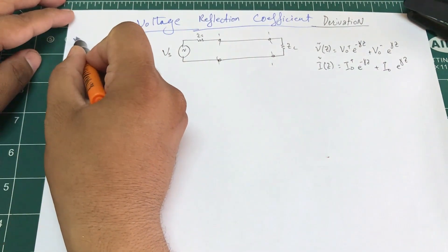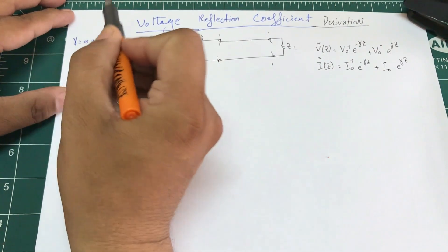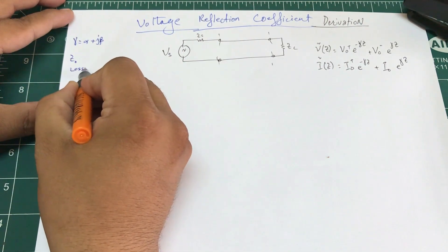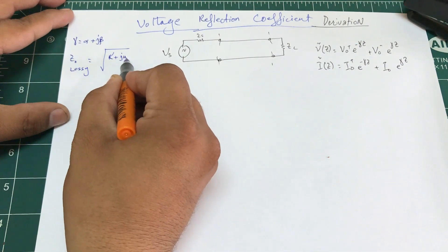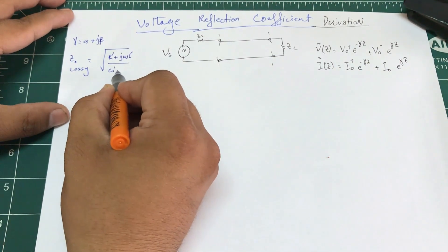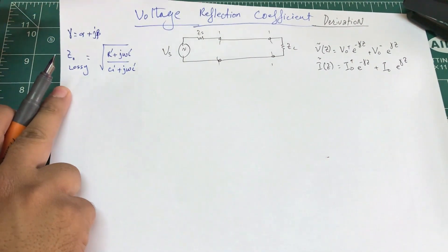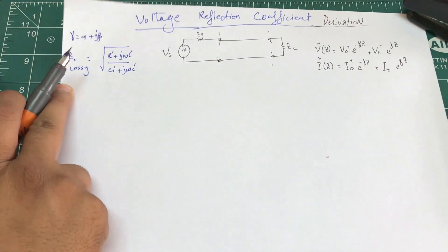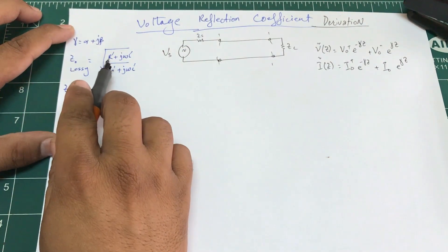Let's recall that γ = α + jβ. In our last video we looked at Z0 for a lossy line, which is sqrt((R + jωL') / (G' + jωC')). That was the last thing we looked at.